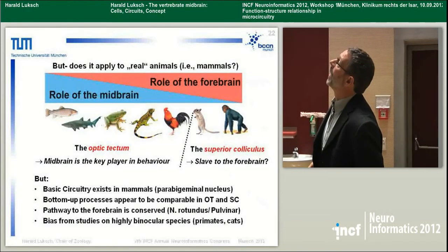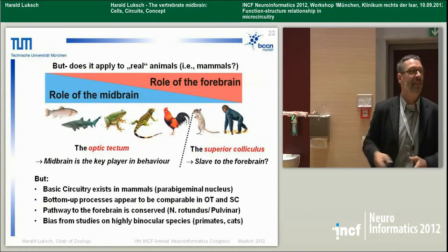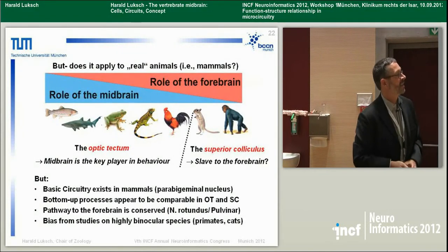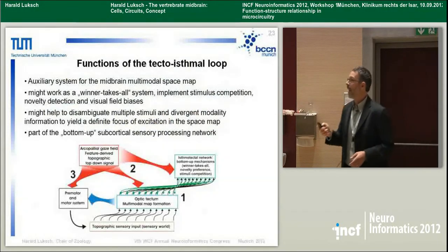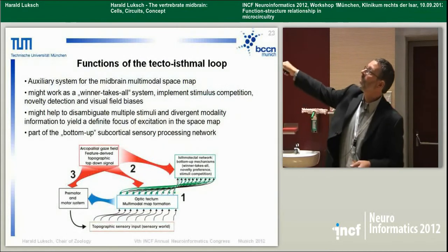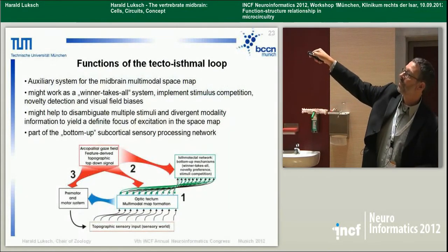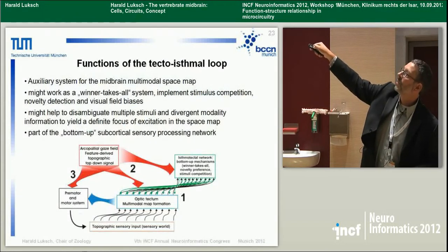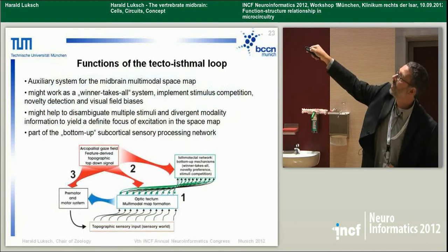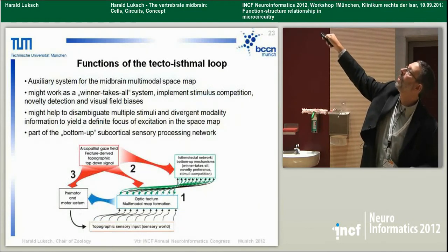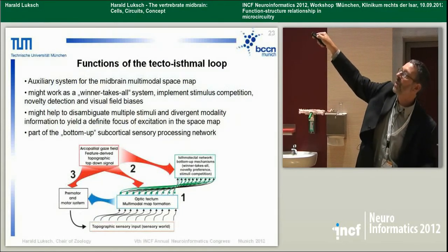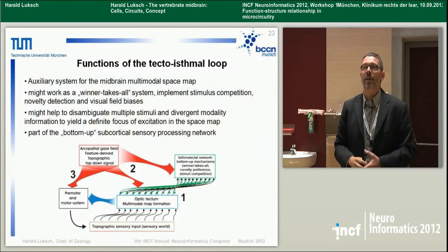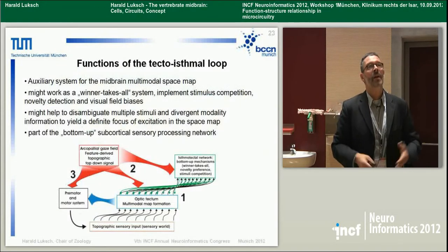This applies to real animals and mammals as well — it's the parabigeminal nucleus, though it has been largely neglected. In summary: topographic sensory input from the world is projected onto the optic tectum, forming a spatial map. The tecto-isthmic system performs winner-takes-all selection, novelty preference, and stimulus competition. This system is then tuned by the forebrain to generate the most survival-appropriate response. Thank you for your patience.